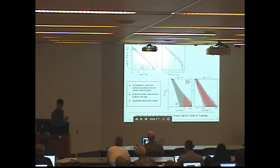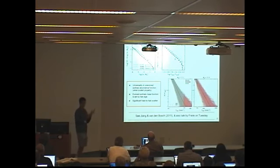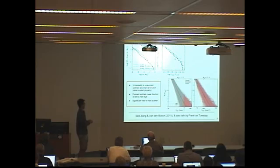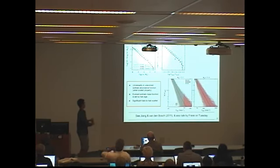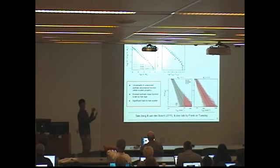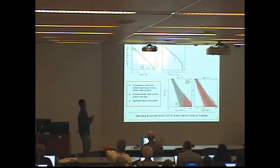These are two of the most important plots that I saw in Frank's talk. The points I want to recap are: first, there is a universality in the unevolved subhalo abundance function, shown as the dashed line. But when you consider the evolved subhalo abundance function, they are lower than the unevolved one.